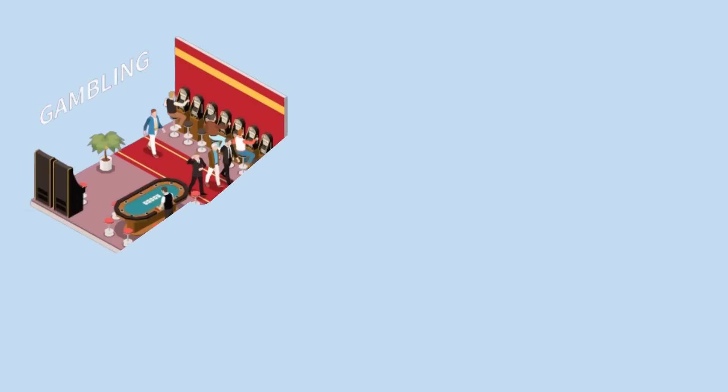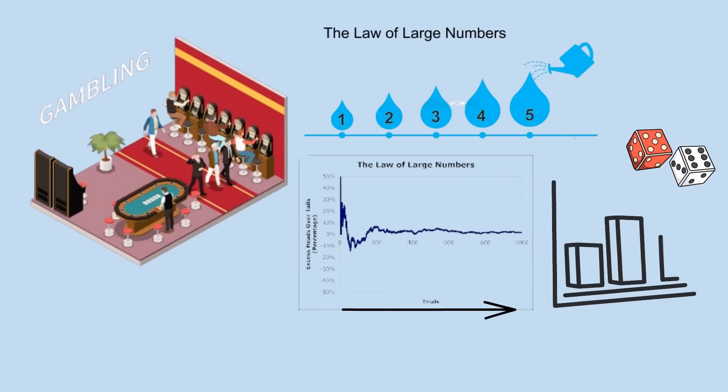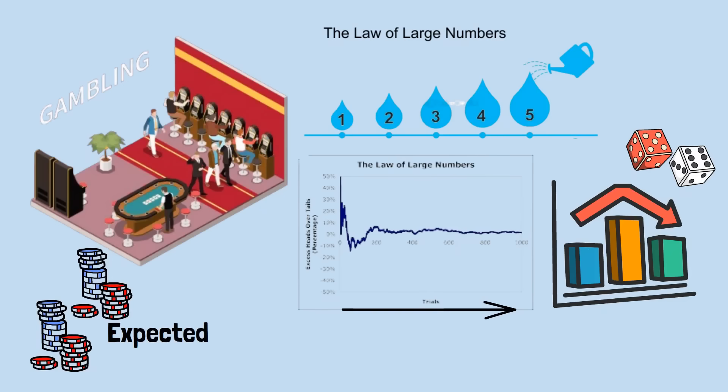One of the most important concepts in casino mathematics is the law of large numbers. Your actual results will converge toward the mathematical expectation as the number of trials increases. After a few dozen bets, your results might deviate significantly from expectations. You could be up or down by substantial amounts. But after thousands of bets, your losses will closely approximate the house edge percentage of your total wagers.